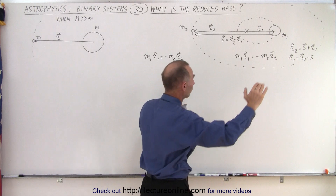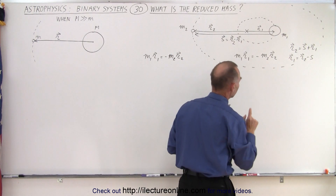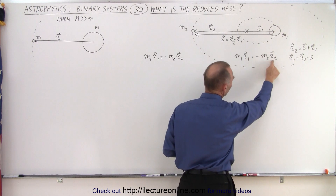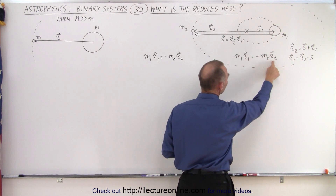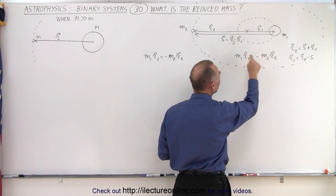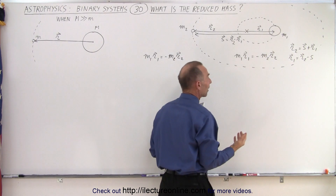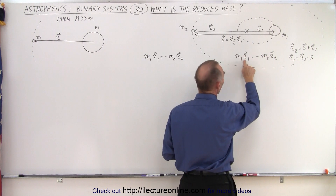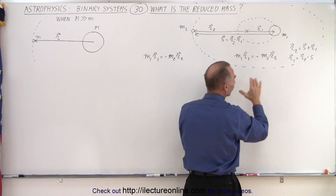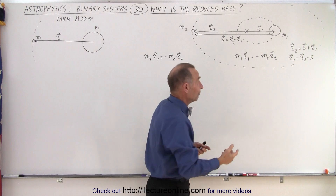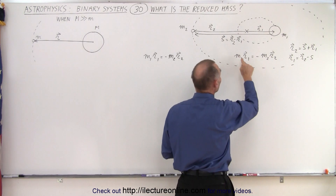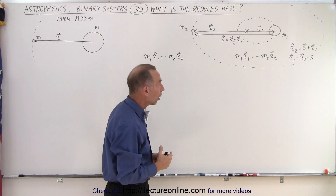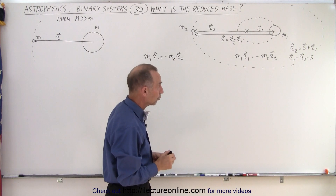We can solve that equation for R2 or R1 and we have that relative relationship between the three vectors, and we're going to need it because we're going to plug that into this equation right here. Notice when you look at this equation, you can see that the size of R1 and R2 are proportional to the ratio of M1 and M2. For example, if M2 is twice M1, then R1 will be twice R2. If M2 is 10 times M1, then R1 will be 10 times R2. So that's how you find the relative size of the two vectors R1 and R2.